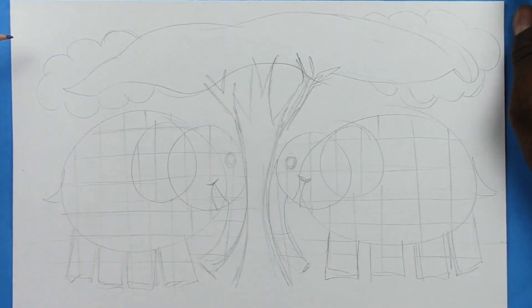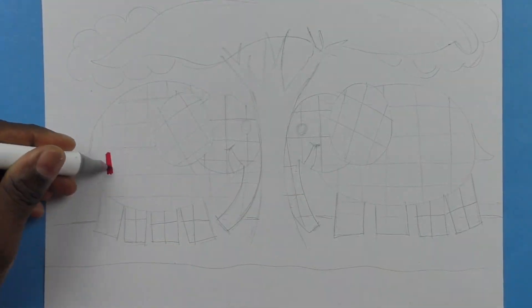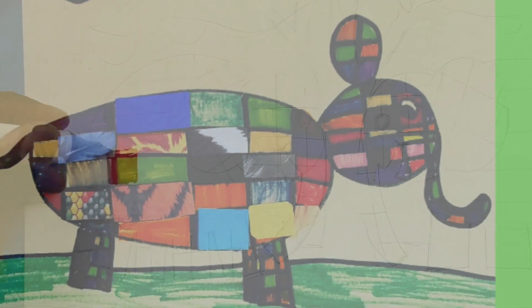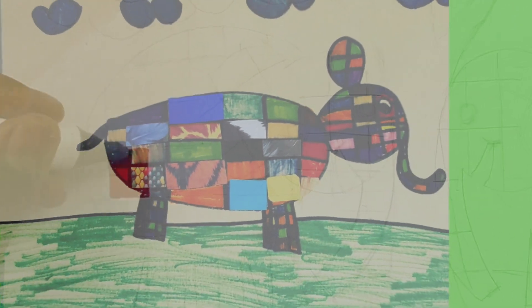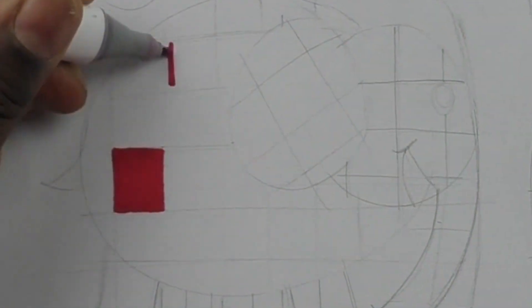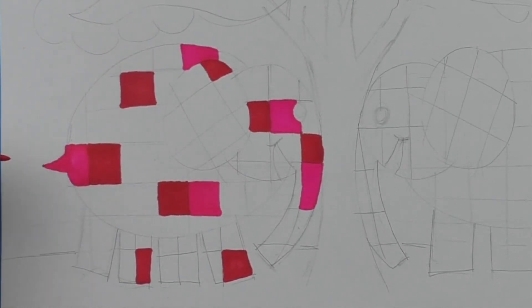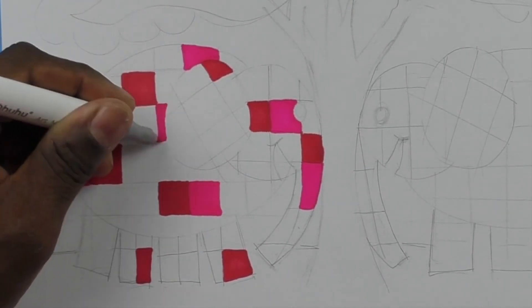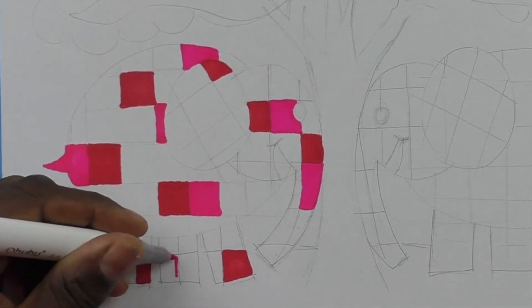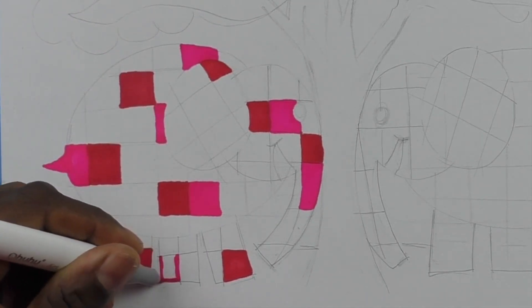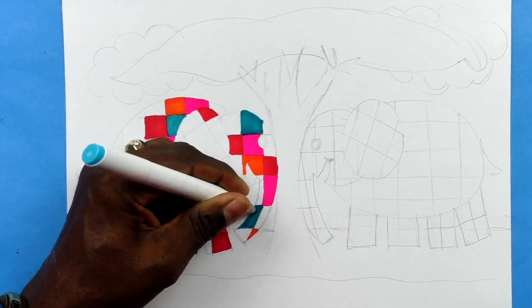Now let's talk about the similarities and differences of Elmer and Wilbur. Elmer is made up of a patchwork of many different colors. And that is what drew Mr. Smith into loving to use Elmer as a character in the classroom. All the different colors.